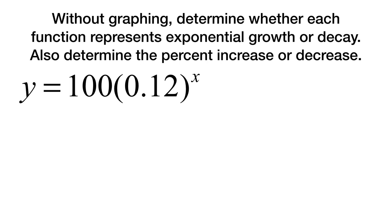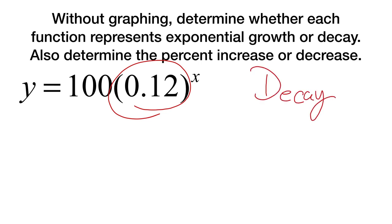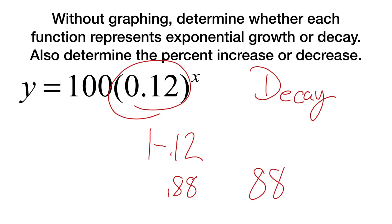Without graphing, we're just going to determine whether or not this is growth or decay. We need to look at the b value. Since this number is between zero and one, that is going to mean decay. To find the percent decrease, we do one minus 0.12, which gives us 0.88 — meaning it is a decrease of 88 percent.